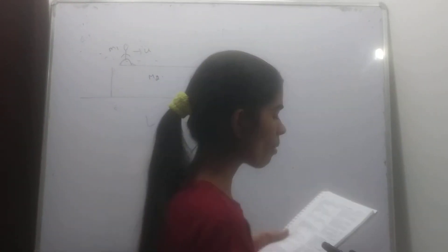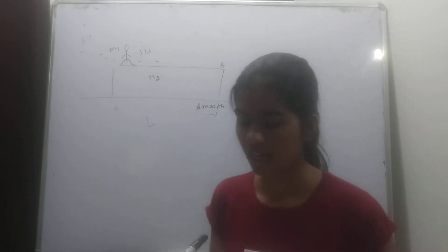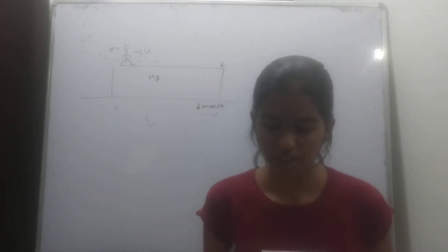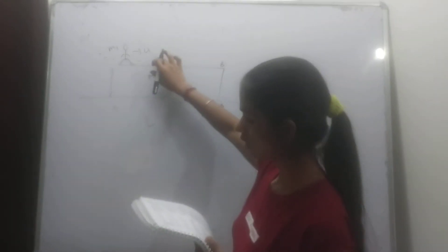Next question here. There is a man of mass M1 standing on a plank of mass M2 and length L, as shown in the figure. There is no friction between ground and plank, but there is friction between man and plank.